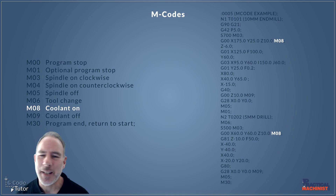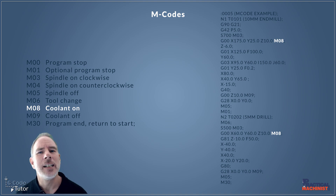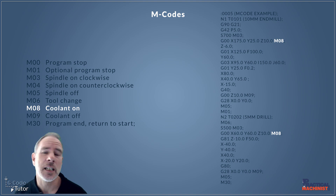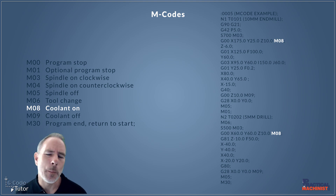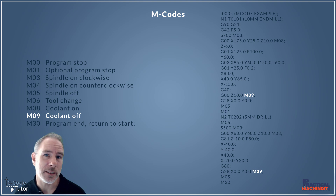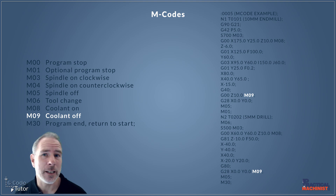When machining, we need to keep things cool. We have to use coolant not just to remove the heat from the tool, but it also helps lubricate our cutter to ensure a nice smooth cut and a good finish. To turn on the coolant, we use M08. A lot of machines have different coolant systems — spray coolant, mist coolant, through-spindle coolant, for example — and all of these have different M-Codes, but one M-Code all machines have in common is M08. The opposite of M08 is M09, which turns off all the coolant in the machine — all the coolant pumps, whether it's through spindle, through tooling, or overhead coolant.